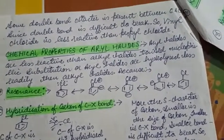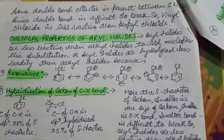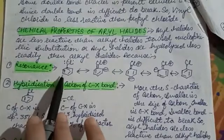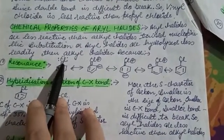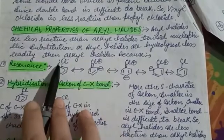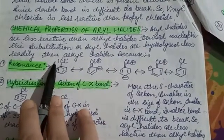The reason is that if you have a resonating structure, then aryl halide is benzene and chlorine, and I have a resonating structure. When you have a resonating structure, which we need to find.